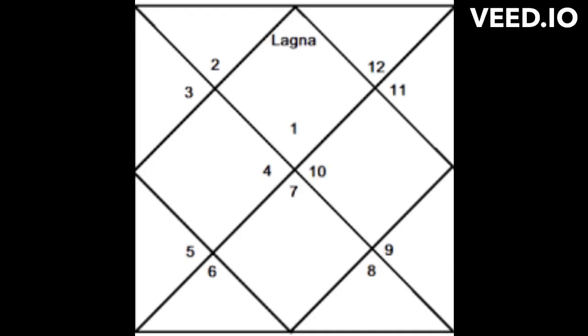The chart is divided into 12 houses, which are spread over 12 zodiac signs.